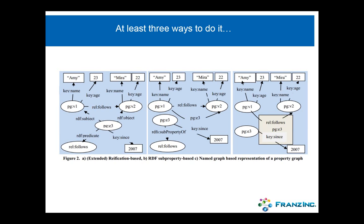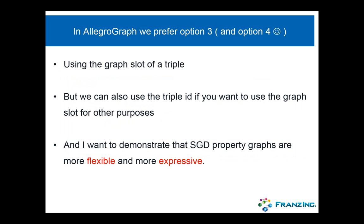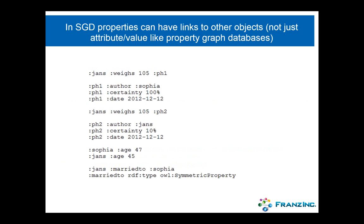You can add whatever you want on this fourth element. In AllegroGraph, we prefer option three, and we actually have an option four. Option three uses the graph slot of a triple for the property graph. But if you want to use the graph element for your own purposes, we also have a way to use the triple ID for the property graph. I'm going to demonstrate that semantic graph databases in general have property graphs that are far more flexible and expressive than regular property graph databases.